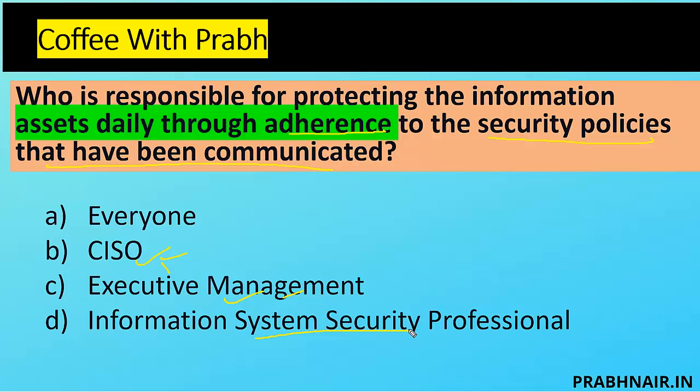The information system security professional — also called ISSP — is more about building a security program; the practitioner will implement. But somehow his role is also in security. So we can say B, C, and D are part of A, because everyone in the organization is responsible for the security of assets according to policy. That's why the answer is everyone.